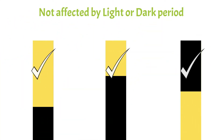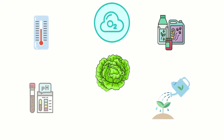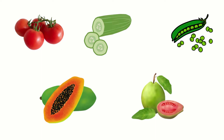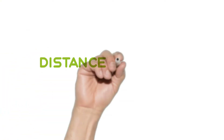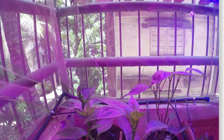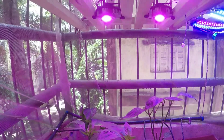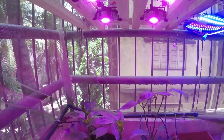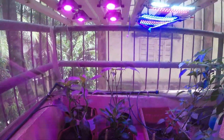Day-neutral plants can flower in any photoperiod. They begin to flower at a certain stage of development or in response to environmental stimuli. Examples include tomato, cucumber, peas, papaya, and guava.